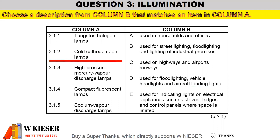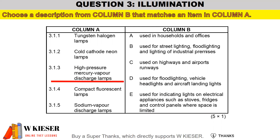Cold cathode neon lamps are used for indicating lights on electrical appliances such as stoves, fridges, and control panels where space is limited. High pressure mercury vapor discharge lamps are used for street lighting, flood lighting, and lighting of industrial premises.